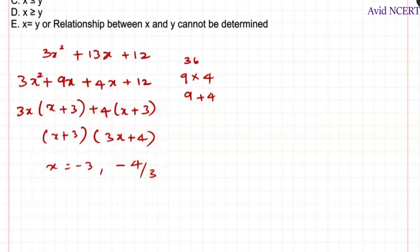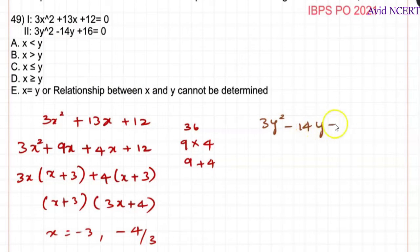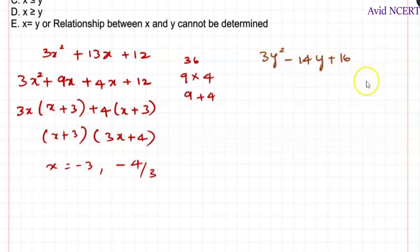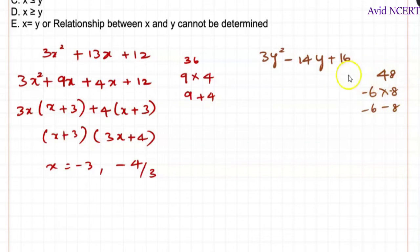For the second equation, 3y² − 14y + 16 = 0. Here, 16 × 3 = 48. We need two numbers whose product is 48 and sum is −14. That gives us −6 and −8, since −6 × −8 = 48 and −6 + (−8) = −14.